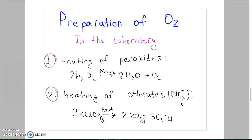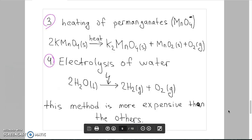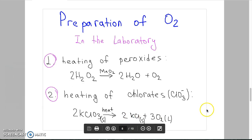Second method is the heating of chlorates. For example, if we take potassium chlorate and heat it, in products will have oxygen molecules and 2 potassium chloride molecules.